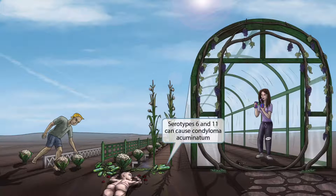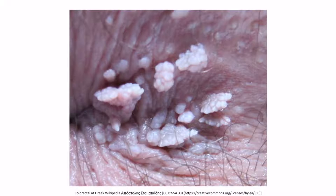Notice that we've shown some cucumbers in the garden next to the rows that represent serotypes 6 and 11. The word cucumber sounds like acuminatum, which should help you remember that serotypes 6 and 11 are associated with condyloma acuminatum. This is a fancy medical term for the anal-genital warts caused by HPV. These warts resemble cauliflower, and when they occur in the anal or genital region, they're referred to as condyloma acuminata.